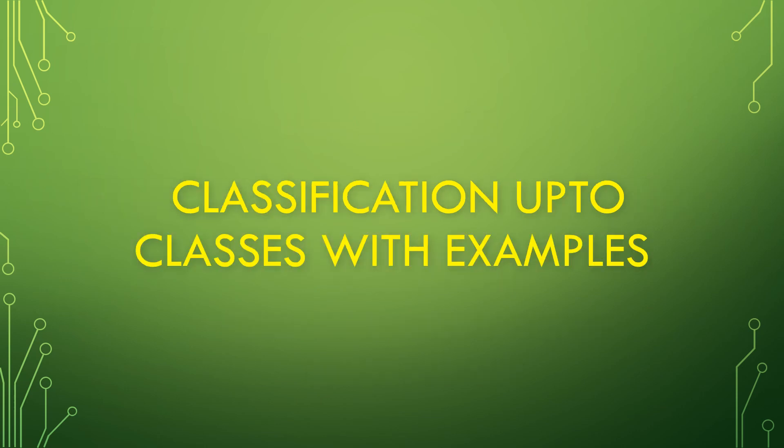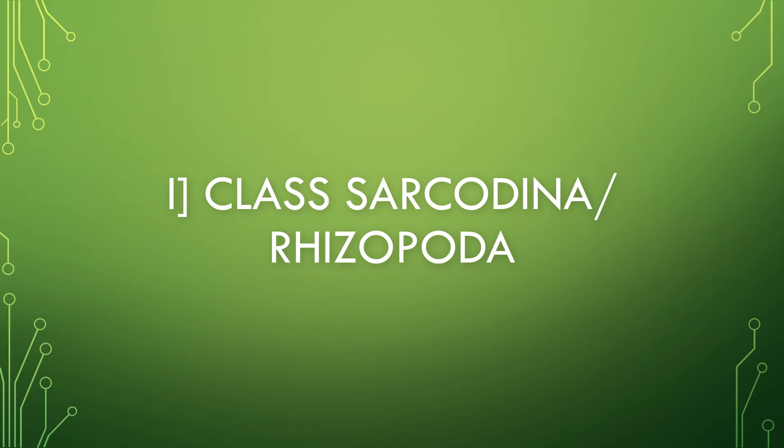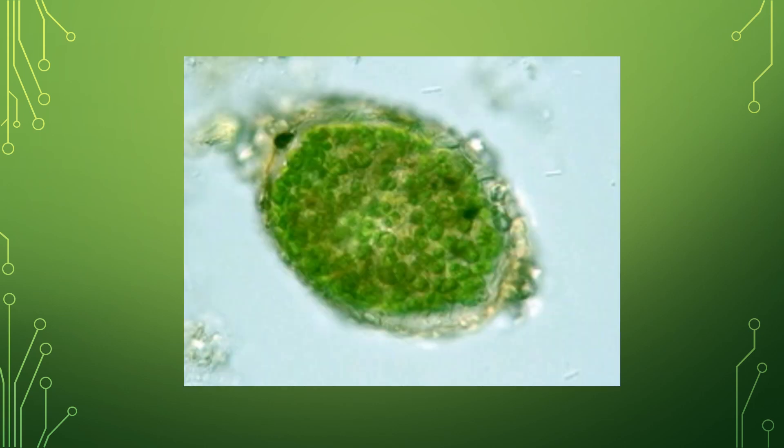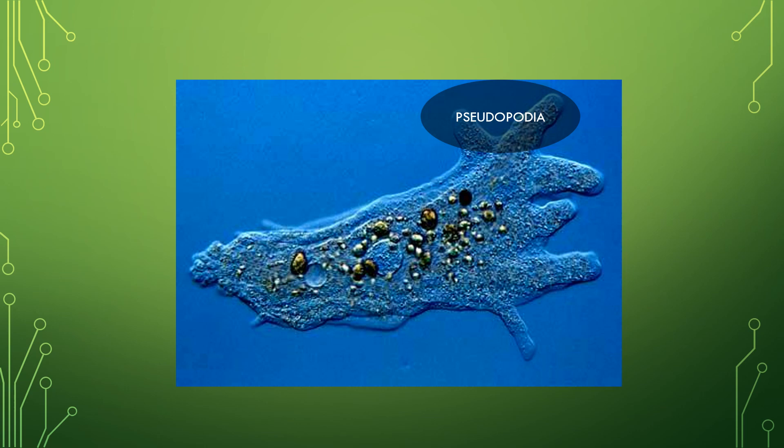The phylum protozoa is classified into four classes based on their locomotory organs. They are as follows: First class Sarcodyna or Rhizopoda. Let us discuss the characteristics of the class Rhizopoda one by one. They are free living or parasites. The body is covered by shell and naked.